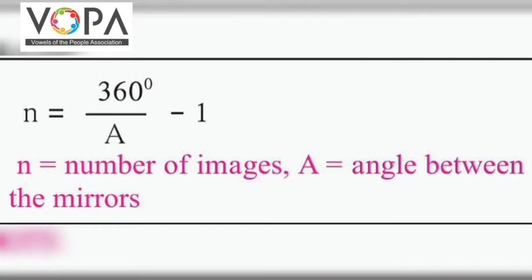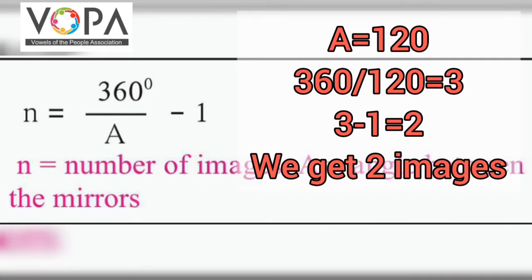If we take the angle between the mirrors as 120 degrees, then 360 divided by 120 equals 3, and 3 minus 1 equals 2. We get two images.